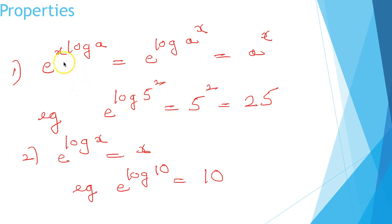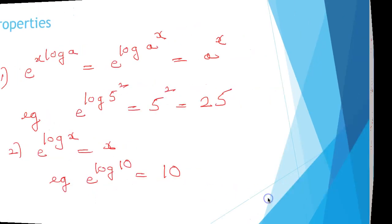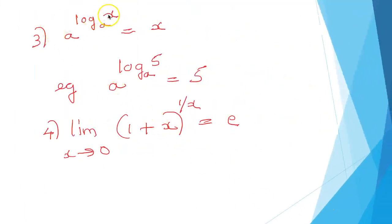Certain properties: e raised to x log a equals e raised to log a raised to x. Since the base is e, this becomes a raised to x. For example, e raised to log 5 squared equals 5 squared, which is 25. E raised to log x equals x, and e raised to log 10 equals 10, since if nothing is mentioned we take the base as e. Also, e raised to log x to the base e — since both bases are e — equals x. For example, e raised to log 5 to the base e equals 5.